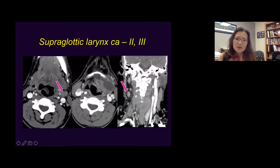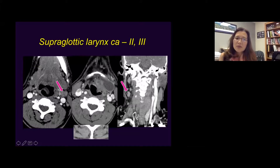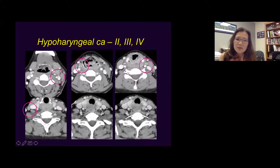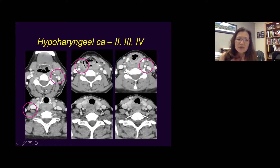Supraglottic larynx cancers can metastasize to bilateral nodal disease. This would be a zone 3 lymph node on the contralateral side. This is a patient with hypopharyngeal carcinoma — notice the enhancing mass starting from the left piriform sinus, extending to the retrocricoid hypopharynx. There is also soft tissue between the vertebral body and the cricoid cartilage. Focus on the lymph nodes: there are bilateral level 3 nodes and a level 4 lymph node — very predictable locations from hypopharyngeal carcinoma.